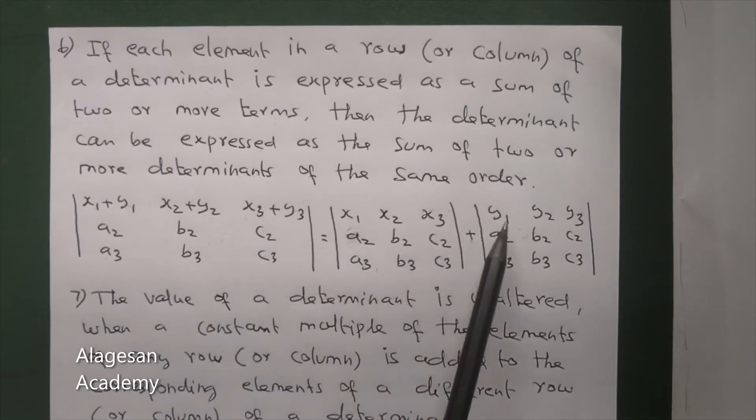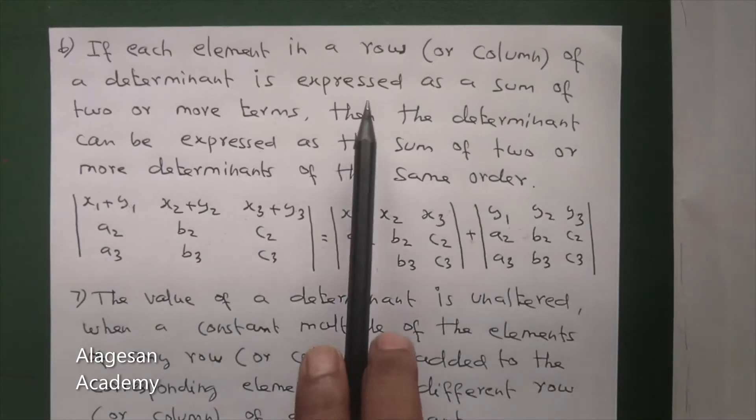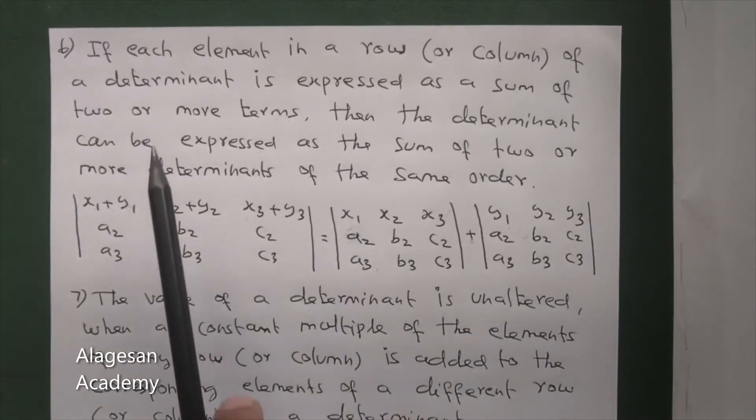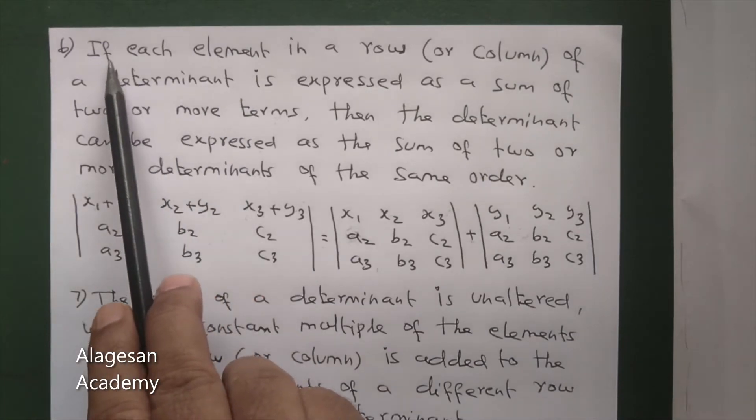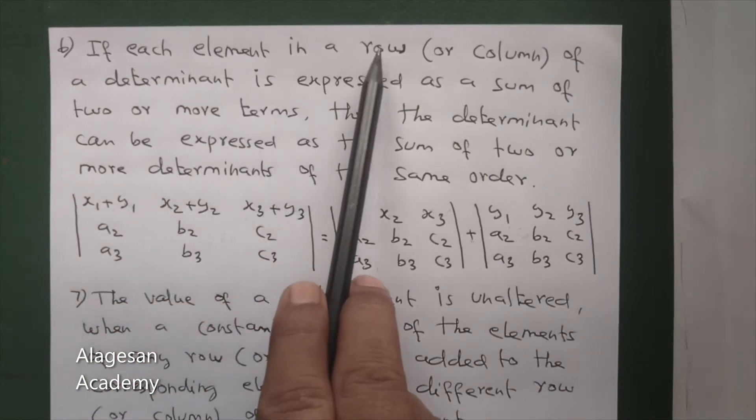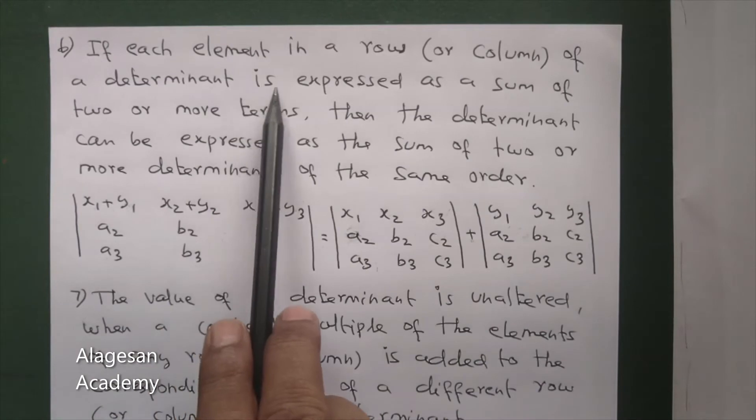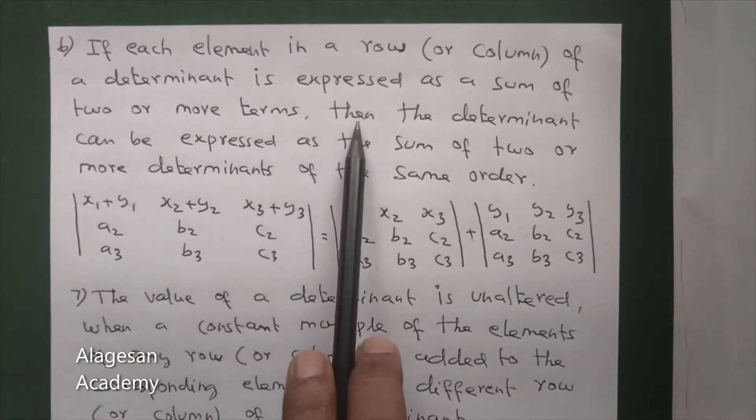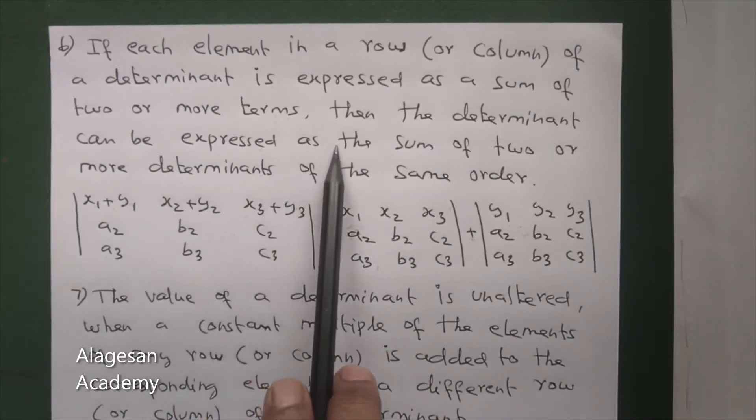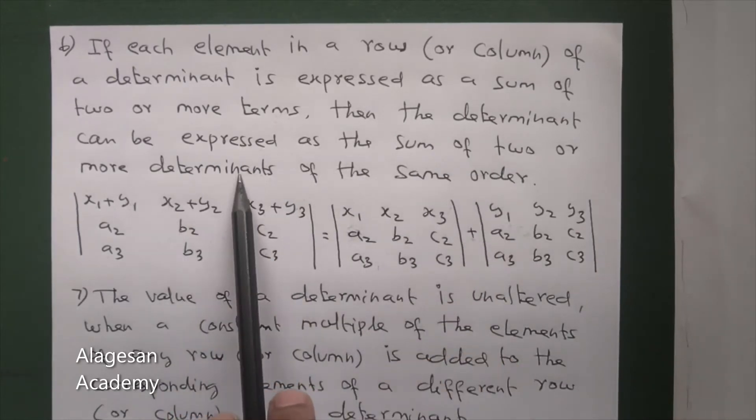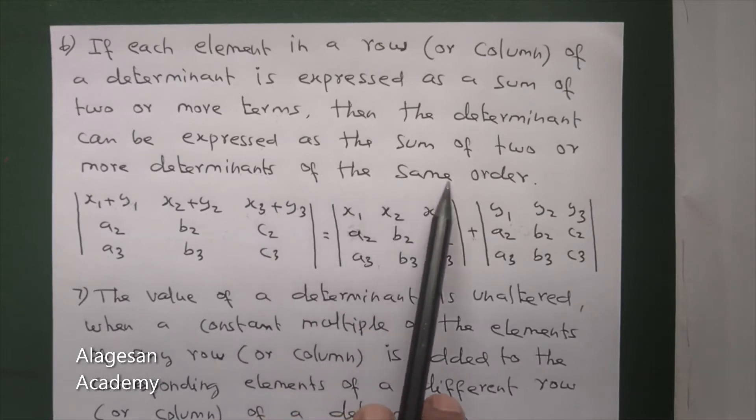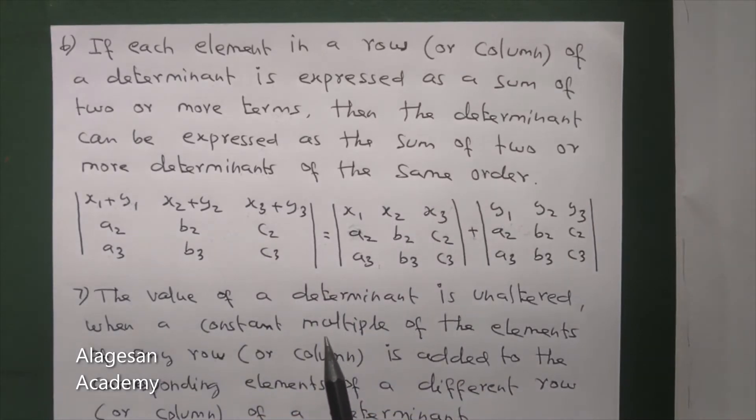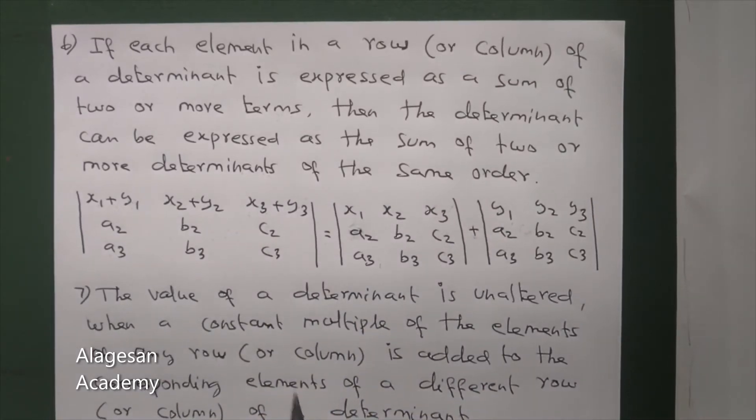In this manner, this determinant can be expressed as sum of two determinants. This is the property. Can you understand? If each element in a row of a determinant is expressed as a sum of two or more terms, then the determinant can be expressed as the sum of two or more determinants of the same order.